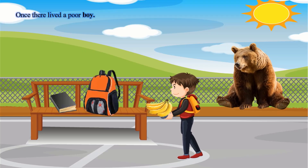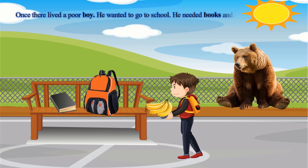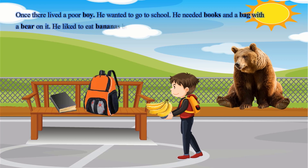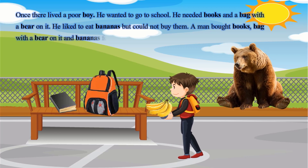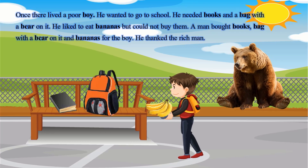Start the lesson by telling the story of letter B: Once there lived a poor boy. He wanted to go to school. He needed books and a bag with a bear on it. He liked to eat bananas but could not buy them. A man bought books, a bag with a bear on it, and bananas for the boy. He thanked the rich man.